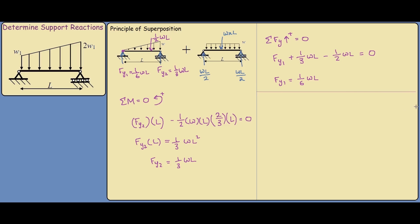Now we can add up our reactions to find the resultant support reaction on both sides. For the left-hand side, FyL equals one-sixth WL plus WL/2, which adds up to two-thirds WL. For the right-hand side, FyR equals one-third WL plus WL/2, which adds up to five-sixths WL. So our support reaction on the left is two-thirds WL, and on the right is five-sixths WL.